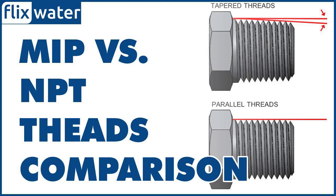Unlike NPT threads, MIP fittings can withstand a lot more pressure and are more often used in industrial piping. MIP fittings are usually metal, while NPT threads are typically plastic.